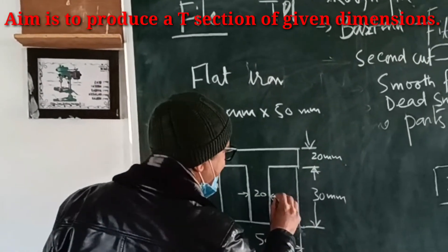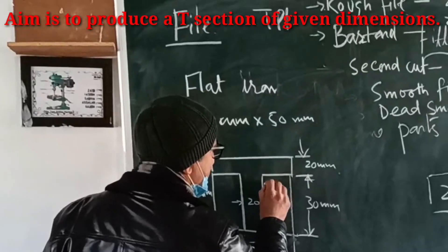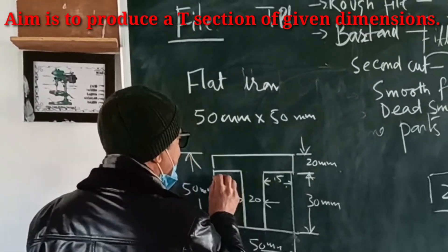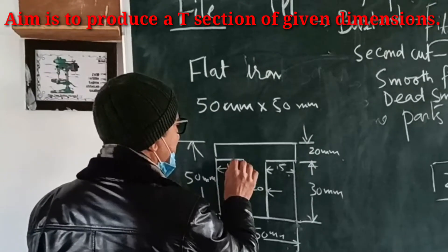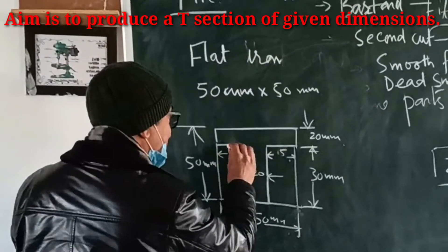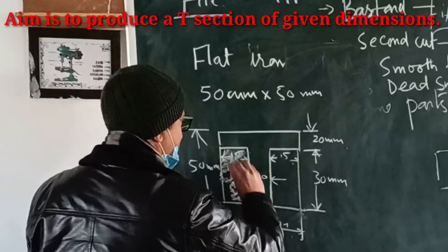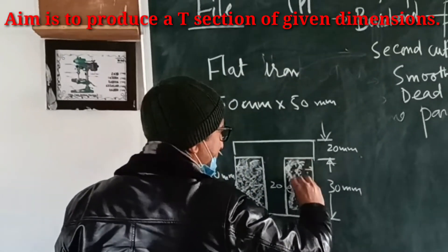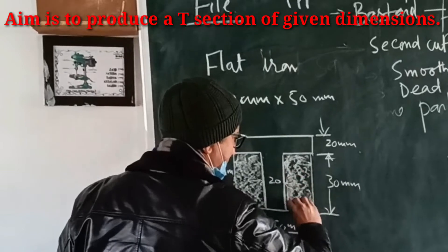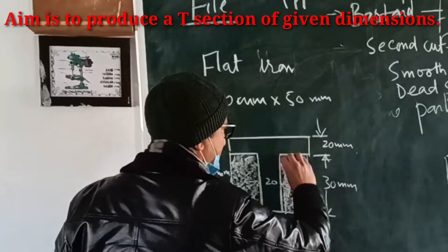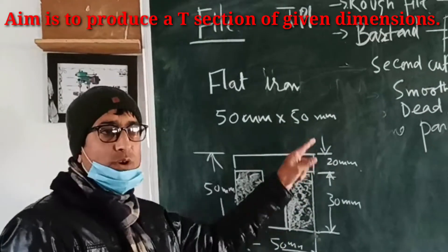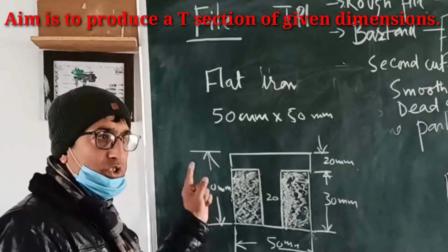That means you are cutting this side — from this point to this point — which is 15 mm here and 15 mm here. So you have to cut this portion. At the end, I need this T cut from this specimen, whose dimensions are 50 by 50.